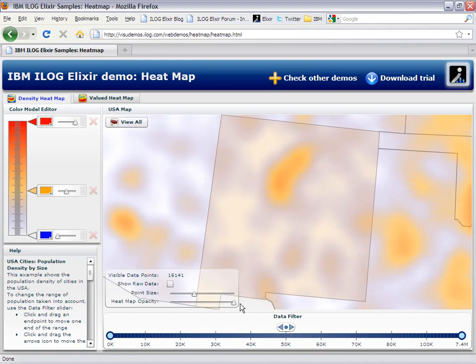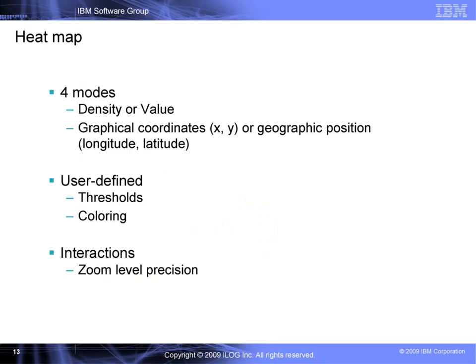Let's now have a look at the heat maps. Heat maps are often used in business dashboards, BI and reporting applications to display how data is spread across regions — either map or physical areas such as web page clicks, for instance. Elixir supports both cases, working either in XY or longitude/latitude, and adds another dimension. You can display either data density — how many items you have here or there — or data values such as weather forecasts or prospect incomes.